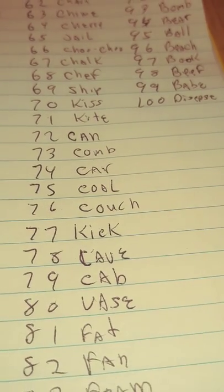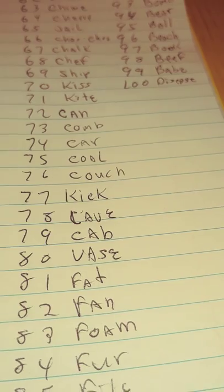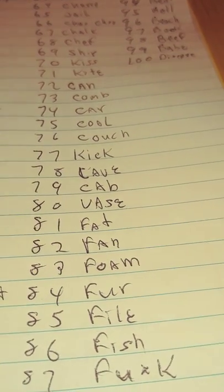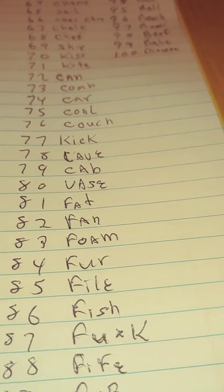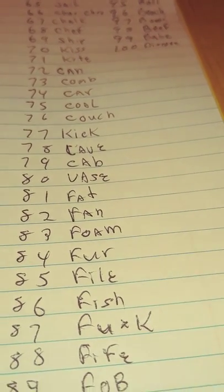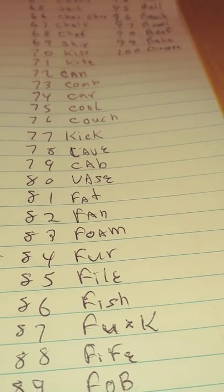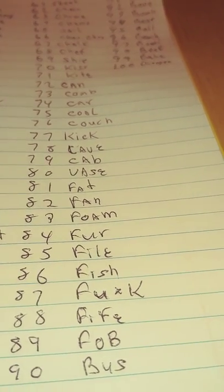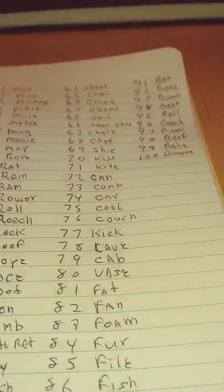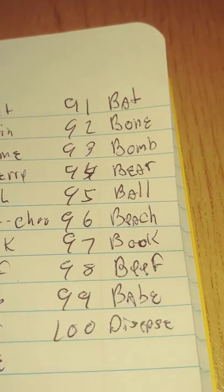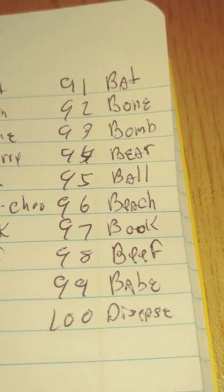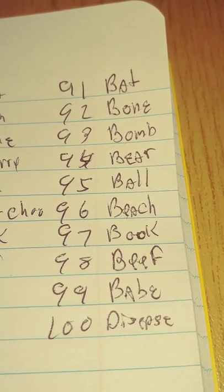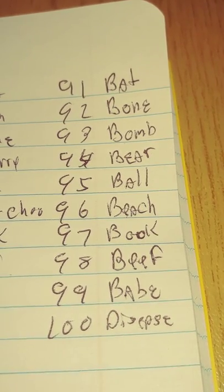81 is fat, 82 is fan, 83 is foam, 84 is fur, 85 is foul, 86 is fish. And there's the F word - I don't like to swear so I won't say it, but that's one of the best words to use. We have 87 fife like a little flute, 88 fob - a little pocket in your jeans, and 89 is bus.